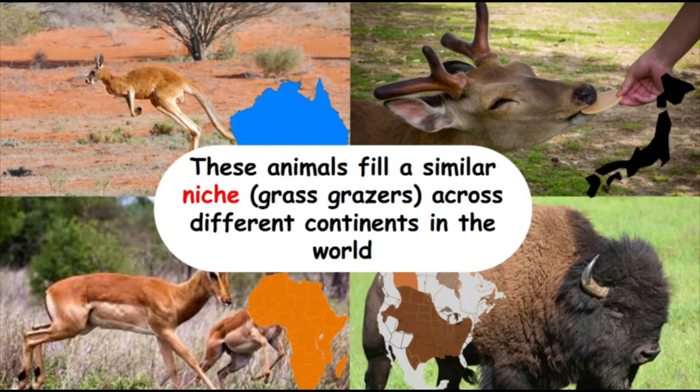Even though they're very different organisms, if you really look into it, they have a very similar role. Because their locations are different it's okay. But if you suddenly tried putting all four of these together in the same area, it's likely that one of them would win out over the others, depending on factors like other food sources or ability to defend against predators.